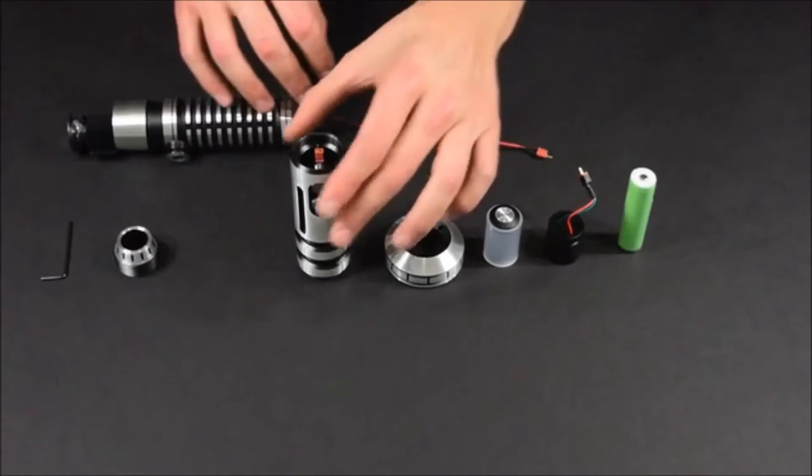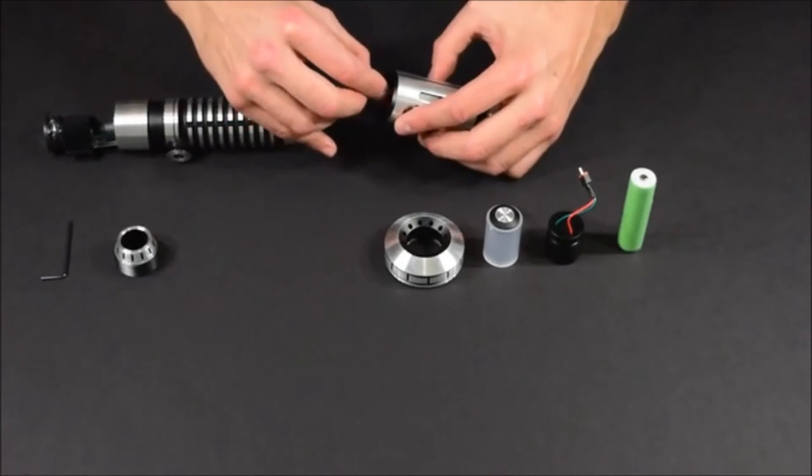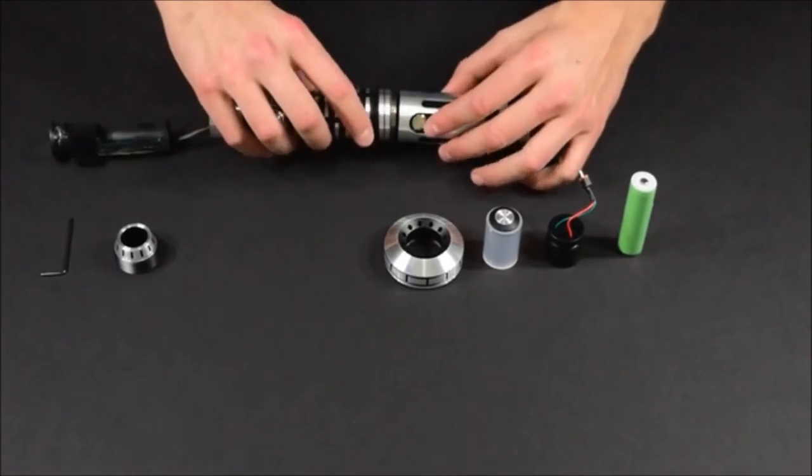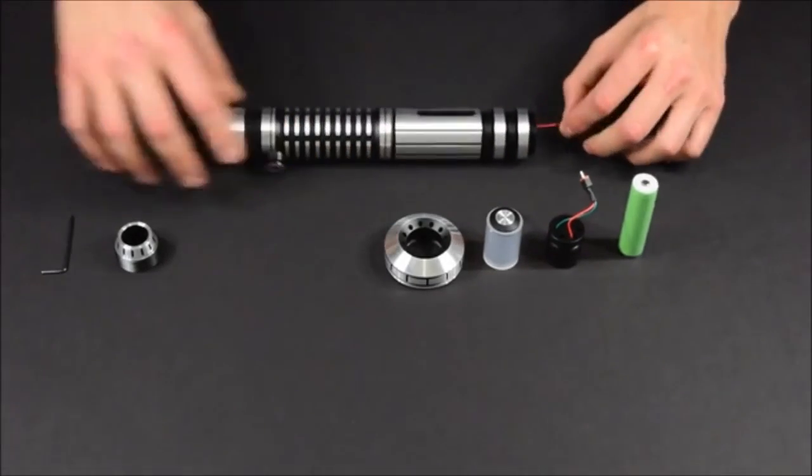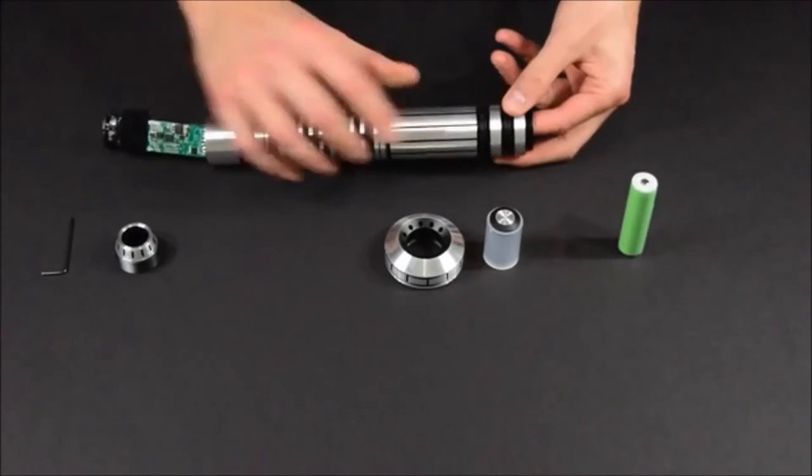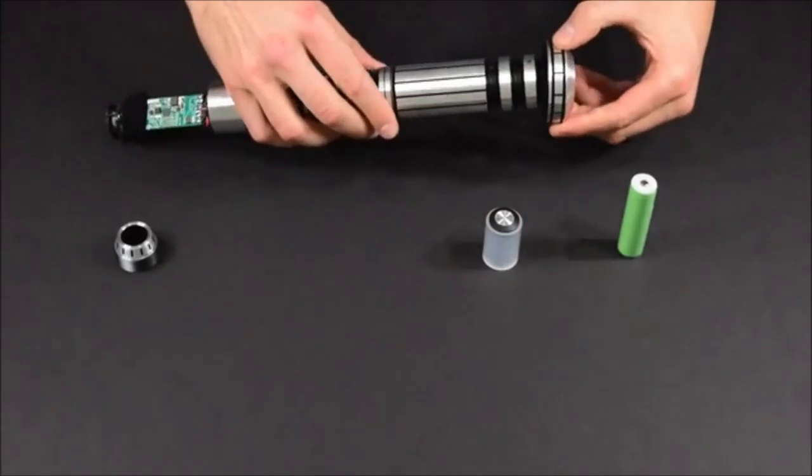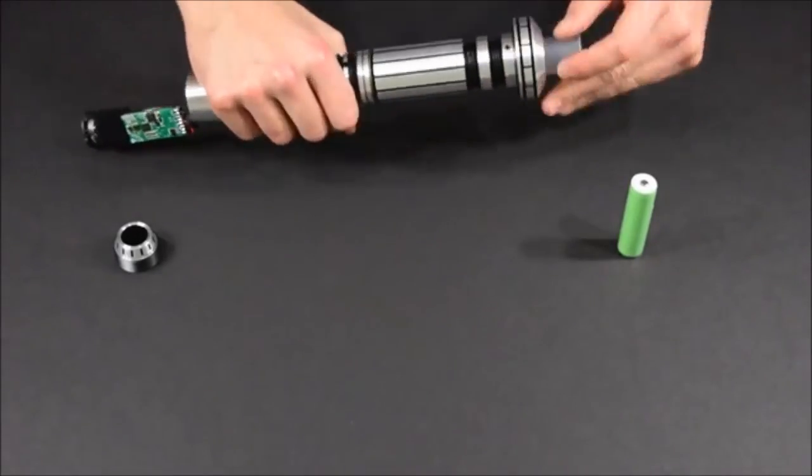Adaptive Saber Parts are an easy to use, modular system that lets anyone construct their very own movie quality custom saber. We have lowered the barrier to entry. Now you don't need expensive machinery, soldering equipment, or years of experience to make your very own custom saber. All you need is your imagination and our new adaptive saber parts.